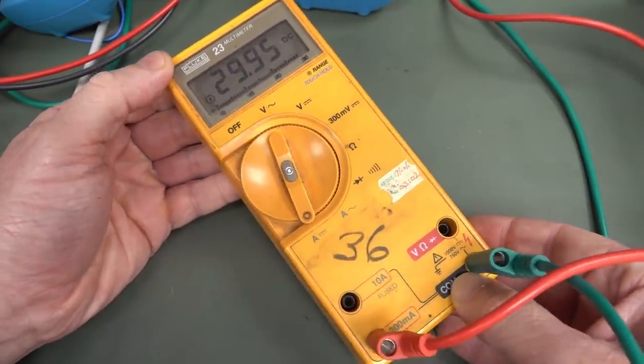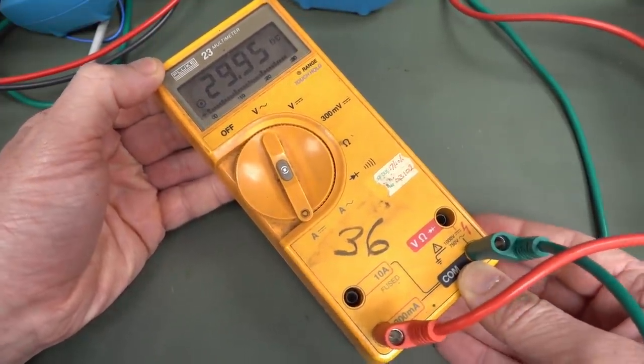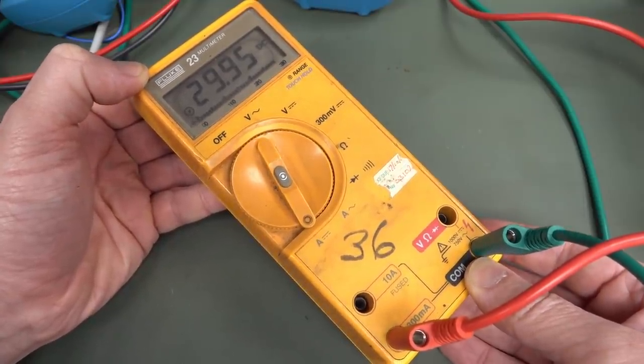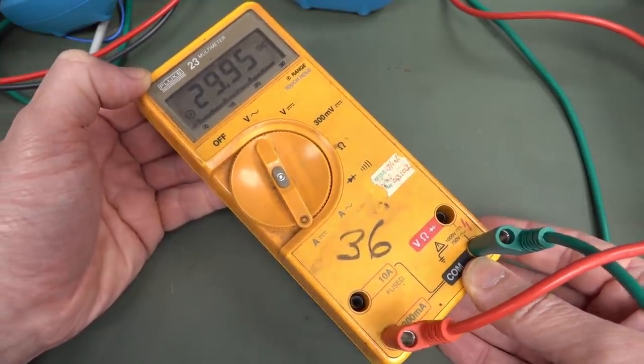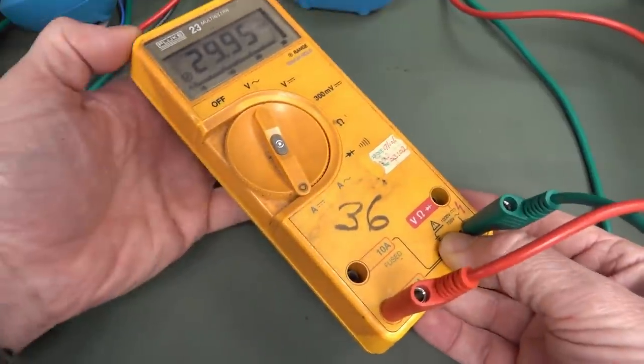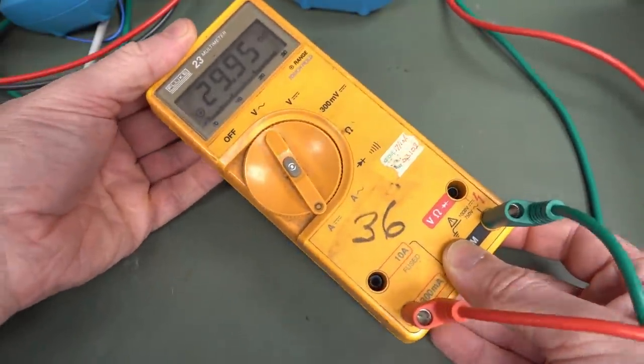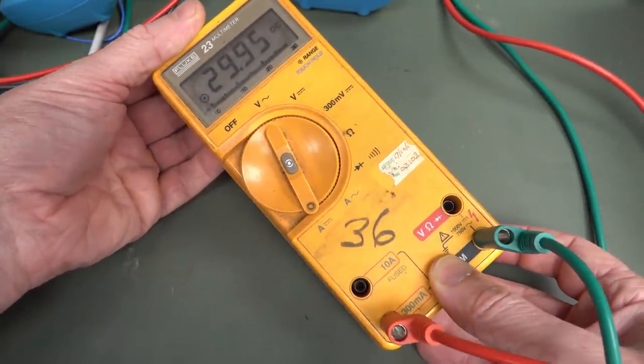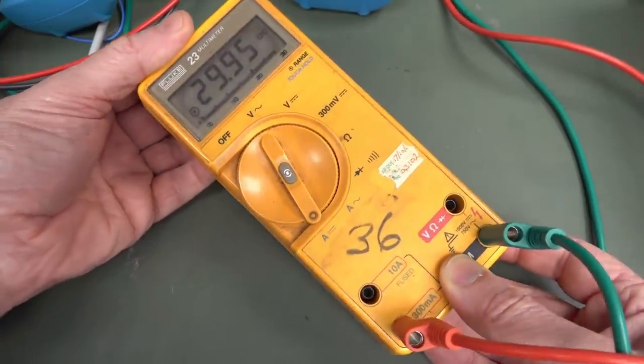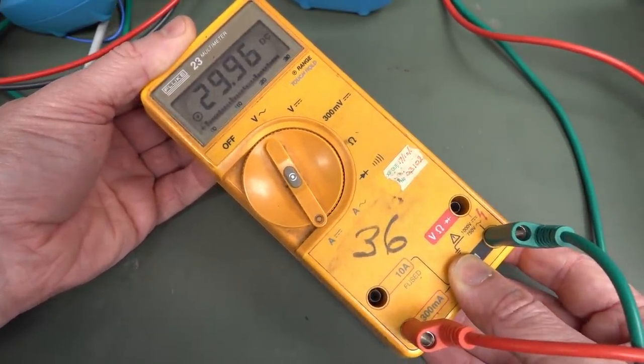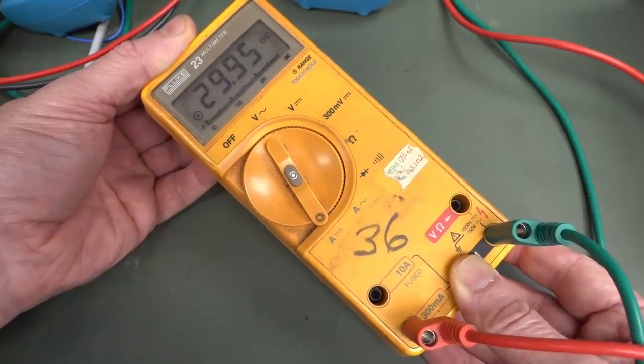Time for a repair video. It's the classic Fluke 23 multimeter, which is the more industrial version of the Fluke 70 meter. It's yellow instead of the charcoal type color of the classic Fluke 70 series. I found it in the bottom of my multimeter box. Everyone's got just like a box of multimeters, don't they?